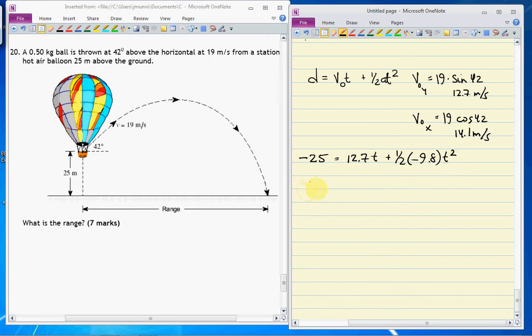This works out to a rearranged formula, where we have negative 4.9t squared plus 12.7t plus 25.